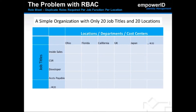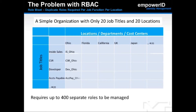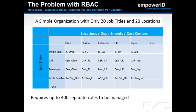One of the primary benefits of an identity management system is the ability to manage access through role creation and assignment. However, management of roles alone quickly gets out of control as an organization grows in complexity — a condition we refer to as role bloat. Take a relatively simple organization with just 20 locations and 20 job titles: in a classic RBAC scenario, you could easily find yourself managing over 400 separate roles, as each combination of job title and location would need a role created to provide the specific access needed.